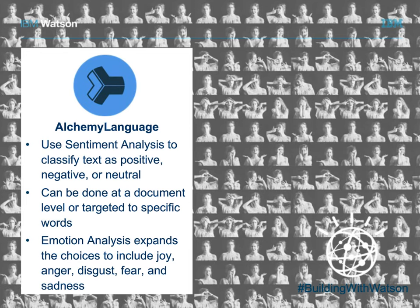Emotion analysis allows users to go one step deeper than sentiment analysis. With sentiment you have positive and negative; with emotion analysis, we can actually detect the probability that joy, anger, disgust, fear, and sadness were expressed in a given text. This analysis is done at the document level — whatever amount of text you put in, you'll get probability scores for those five emotions. It can be a full article or a single tweet, and you'll get the joy, anger, disgust, fear, and sadness scores for that input text.